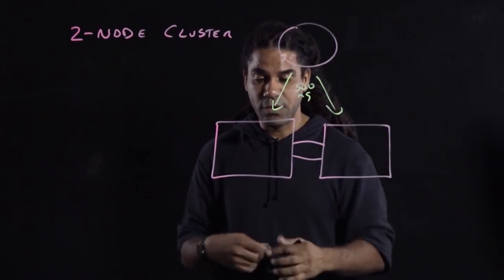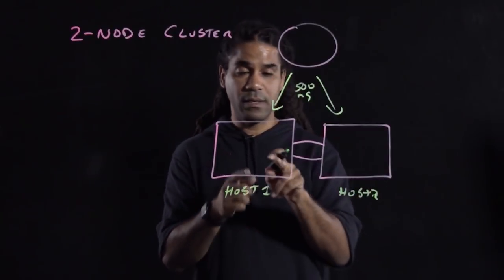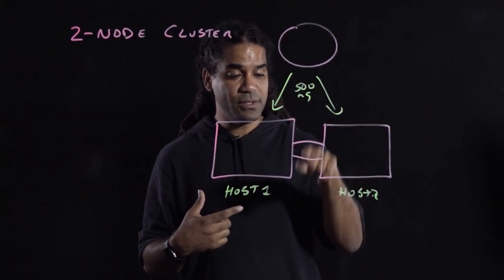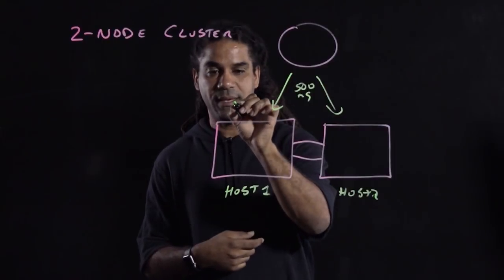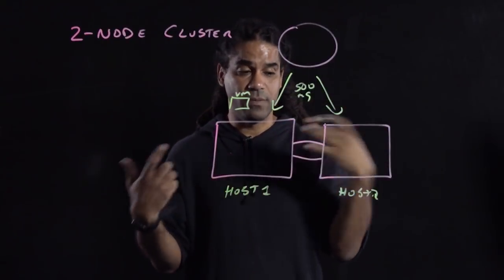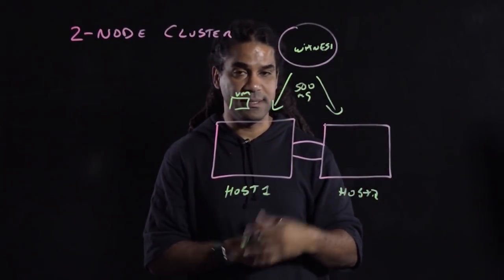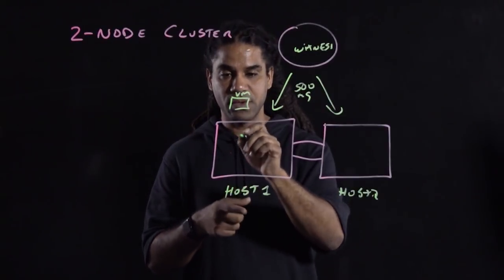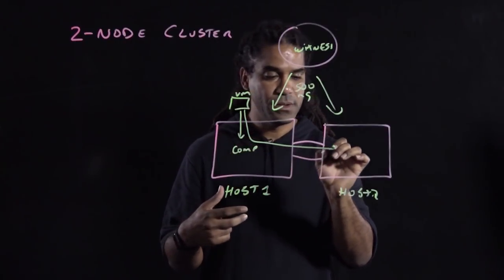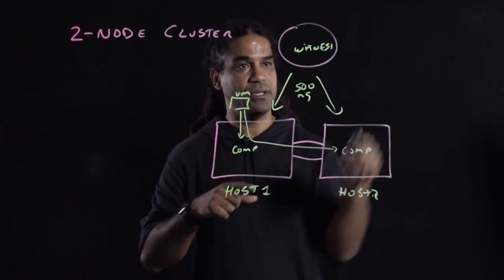So you have host number one and host number two. They have two connections between each other, because you want redundancy. When you have a VM running on one host and you enable an FTT of one using the RAID-1 method, then you have the witness — that ESXi virtual appliance acting as the witness VM. This host saves a copy of its component to the other host, because we have FTT of one, and the second copy goes there as well. So you end up with two data copies that are replicas of each other, plus the witness.